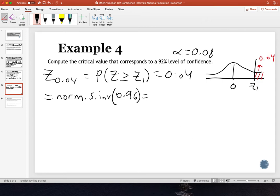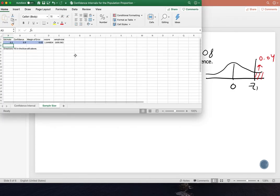And we could put that into Excel, I'll just use the same sheet, norm.s.inv of 0.96. That will give us a value of about 1.75.